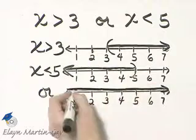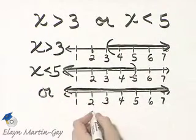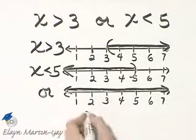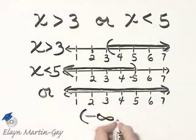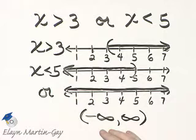Because between the two number lines, everything's been shaded. So if I shade the entire number line, what would be my answer in interval notation? I have shaded from negative infinity to infinity. Every single real number is a solution to the original compound inequality.